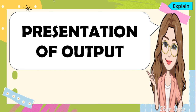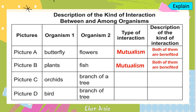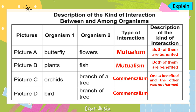Now it's time to present your output. Based on your answers, let's find out if you are correct. The type of interaction for butterfly and flowers is mutualism — both of them are benefited. For picture B, plants and fish, the type of interaction is also mutualism — they are both benefited. For picture C, orchids and a branch of a tree, it is commensalism — one is benefited and the other one is not harmed. For picture D, the bird and a branch of a tree, it is also commensalism — one is benefited and the other was not harmed. Good job, kids!